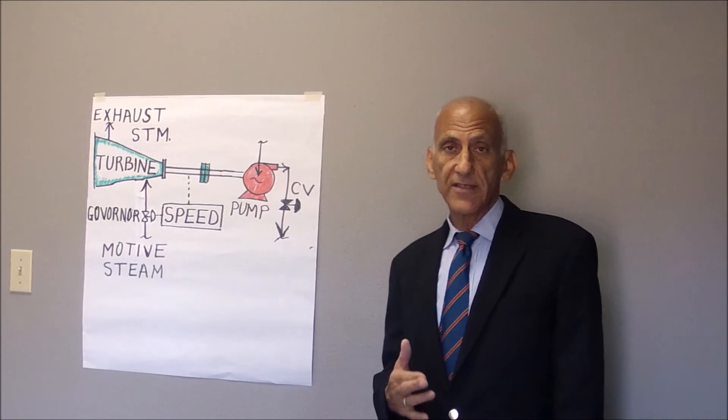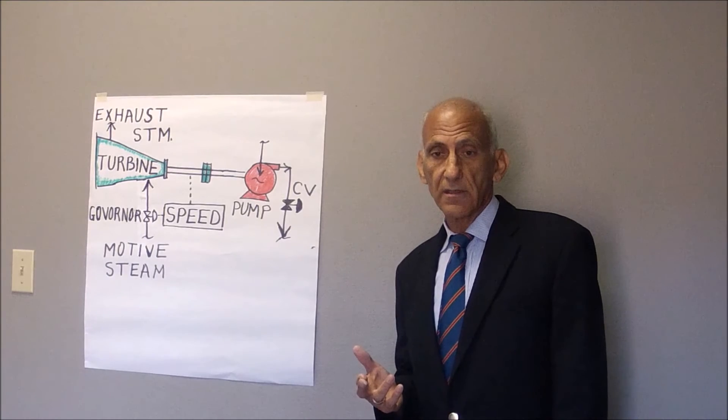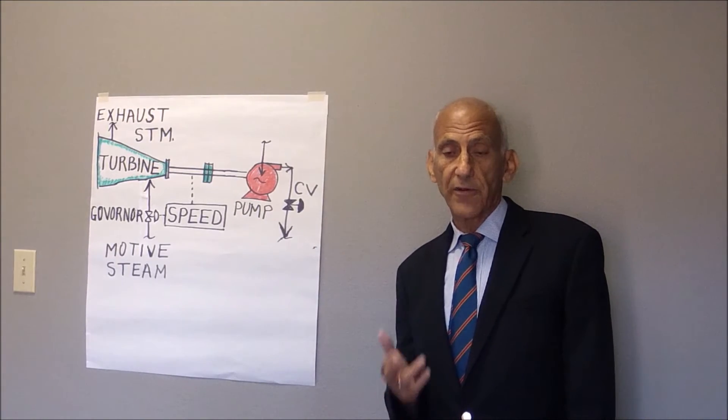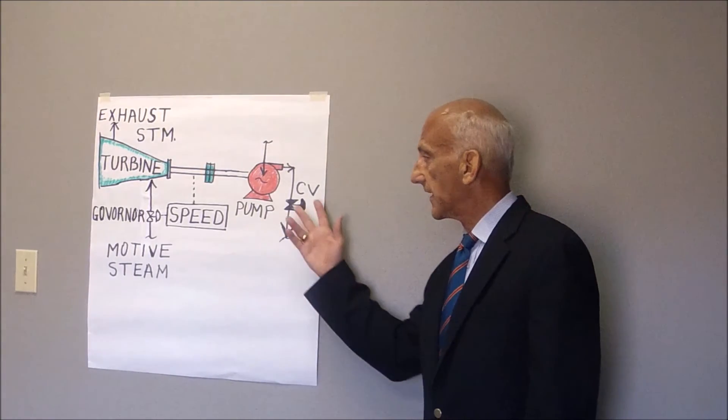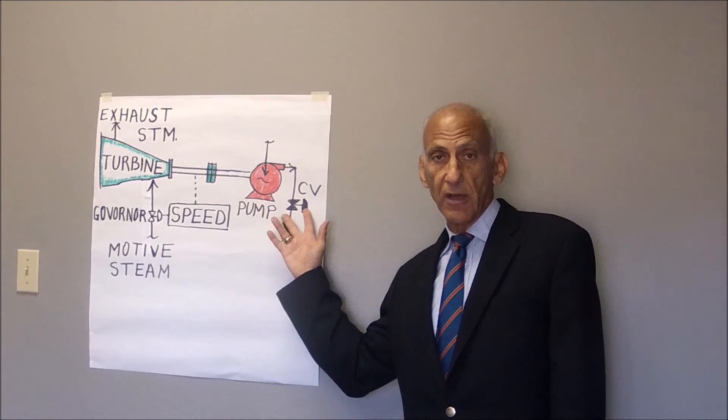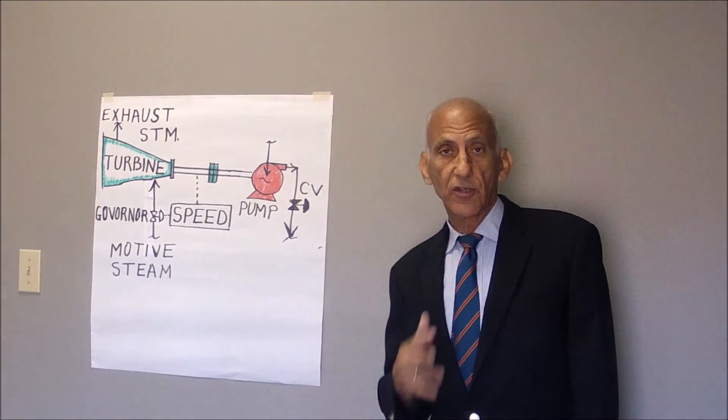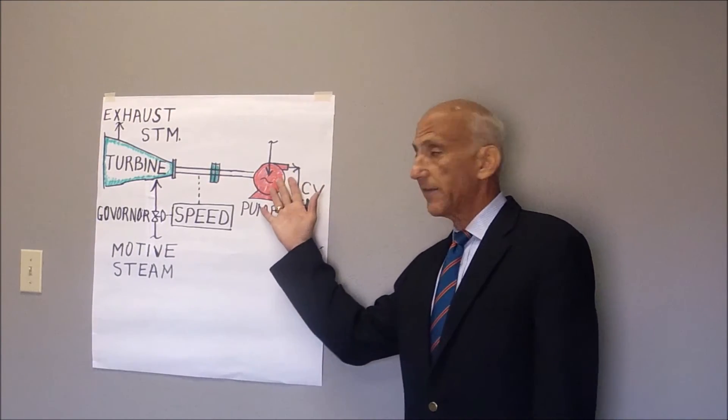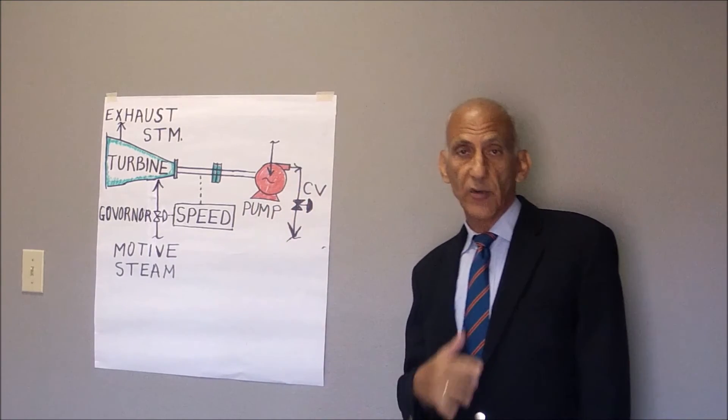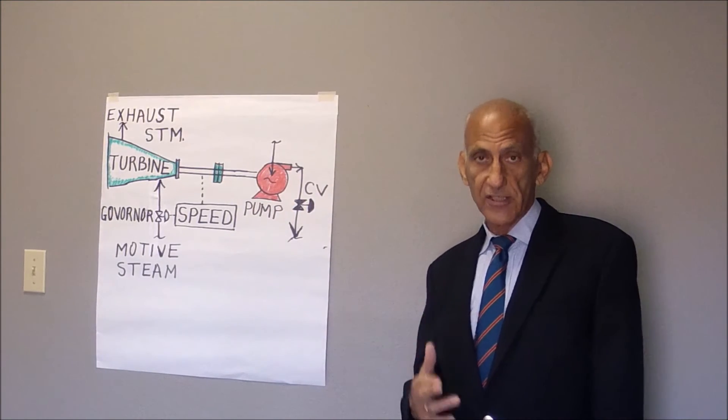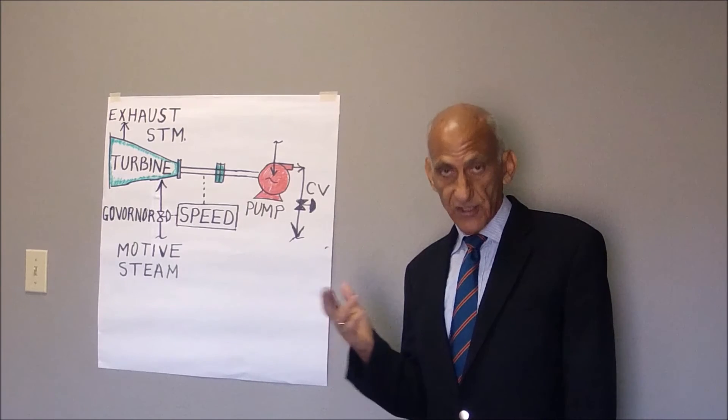Now, this raises two other questions. The first question is, perhaps you don't actually need this valve on the discharge of the pump. Perhaps you can control the flow delivered by the pump simply by directly adjusting the turbine speed. And that's done all the time.